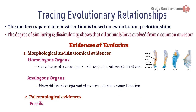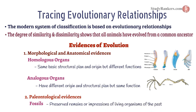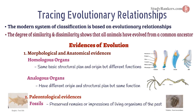For example, wings of a butterfly, bird, and bat. The second evidence is paleontological evidences, which includes fossils. Fossils are the preserved remains or impressions of living organisms of the past. For example, trilobite, which is a fossil invertebrate, and Nitea, which is a fossil fish.